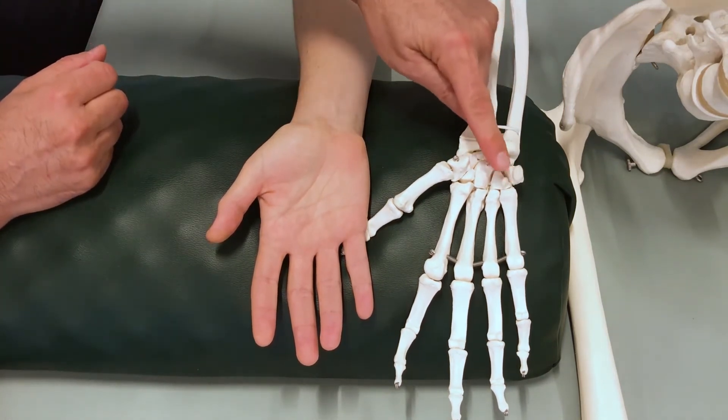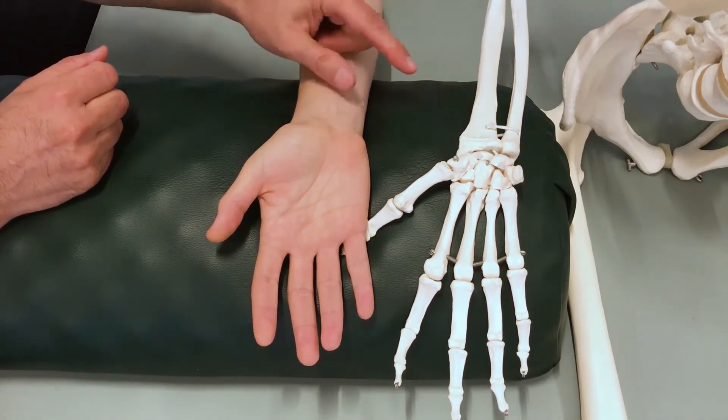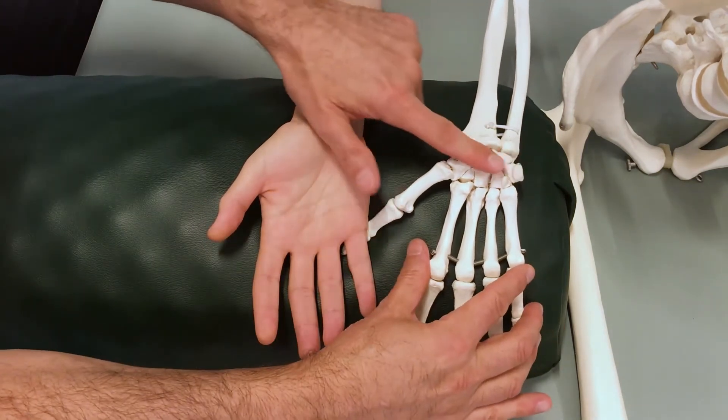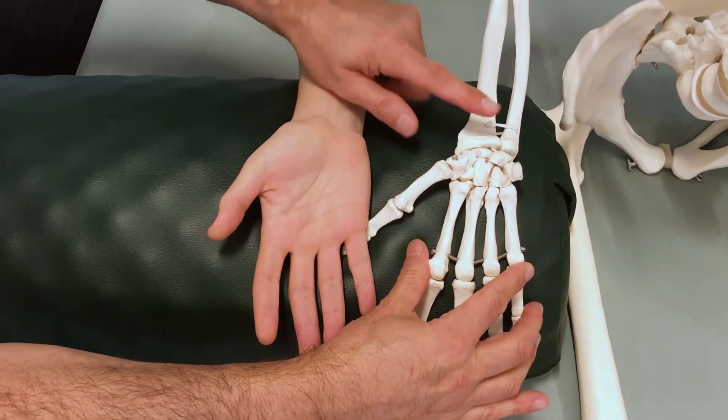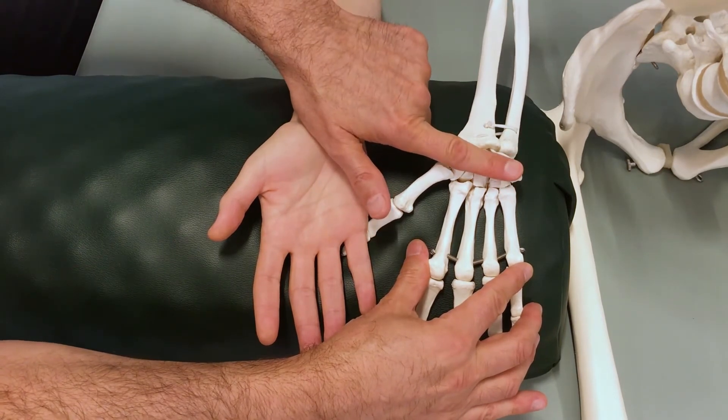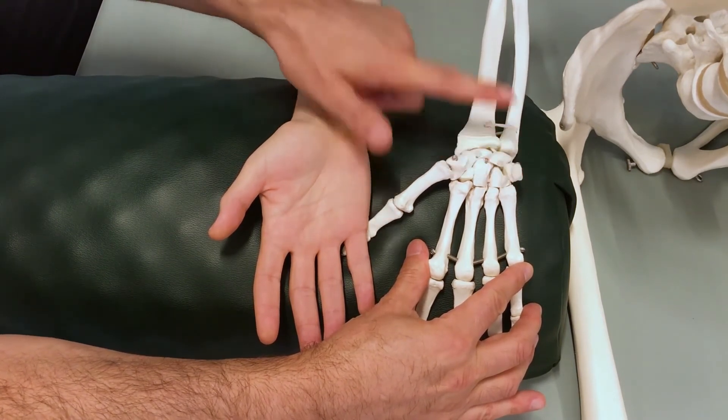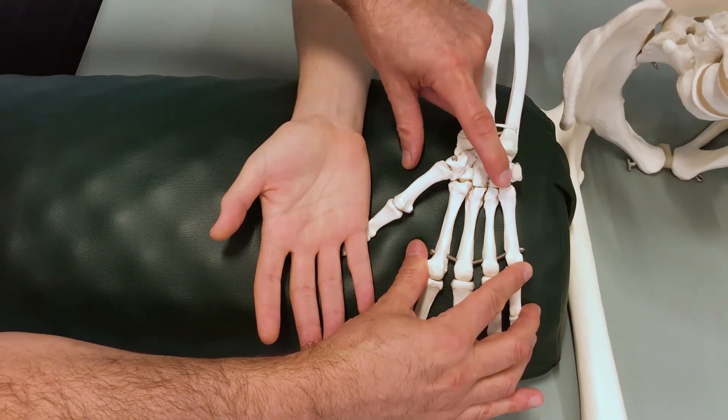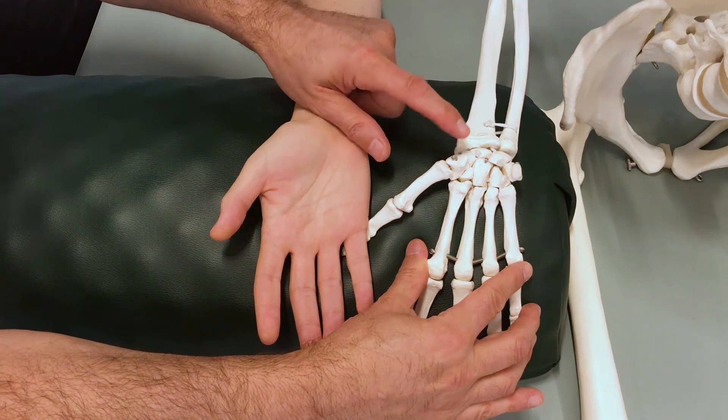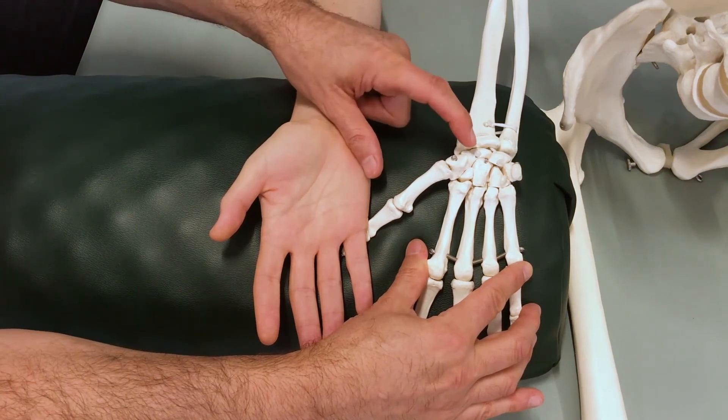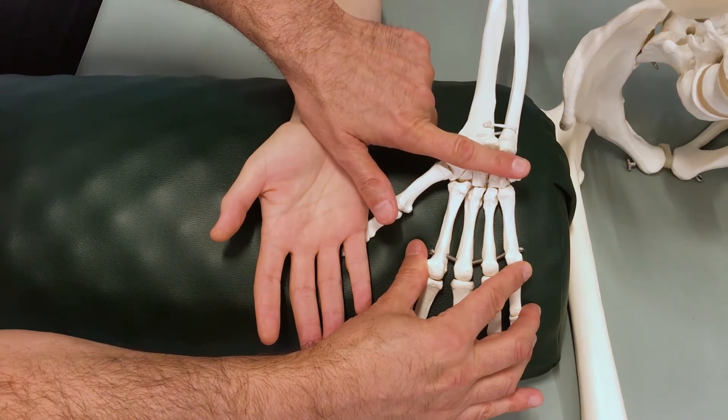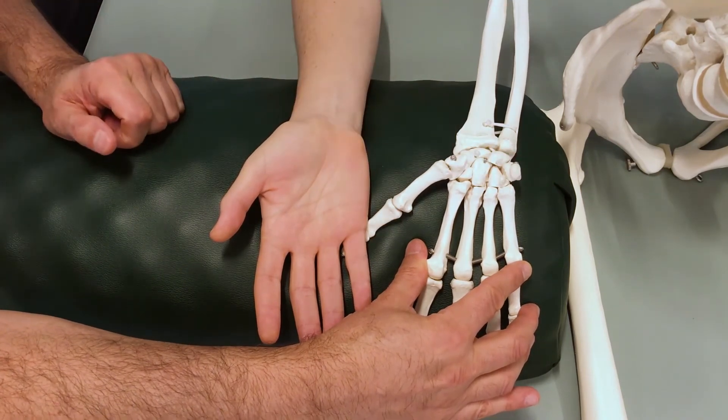These four prominent landmarks are important because a ligamentous fascial structure runs across them and that structure is the flexor retinaculum, also known as the transverse carpal ligament. Again, it goes from the ulnar side pisiform and hook of hamate to the radial side tubercle of trapezium and tubercle of the scaphoid and that fascial structure is the roof of the carpal tunnel.